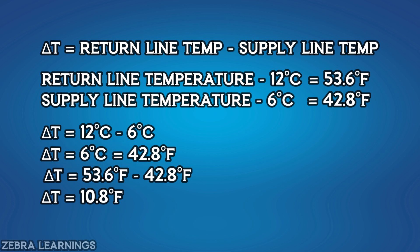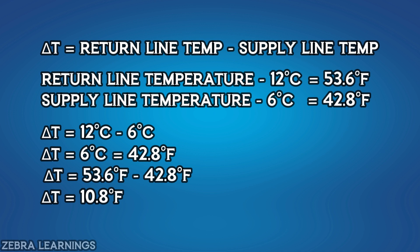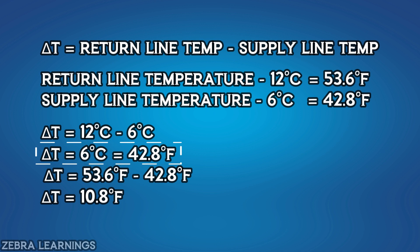When calculating in degrees Celsius, the delta T answer is 6 degrees Celsius, whose direct Fahrenheit conversion would be 42.8 degrees Fahrenheit. But calculating the difference directly in degree Fahrenheit gives 10.8 degrees Fahrenheit. So when working in degree Fahrenheit, we must convert both the return and supply temperatures to Fahrenheit first and then find the difference. If you find the difference in degree Celsius and then convert it to Fahrenheit, the answer will be wrong.